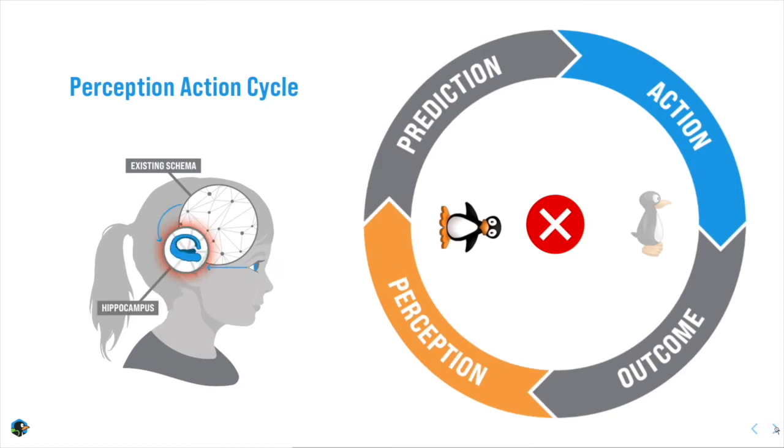But this time, they do not match. First, the hippocampus sends a signal that deprioritizes that schema. So the next time I see a problem like this, that schema is much less likely to influence my thinking.